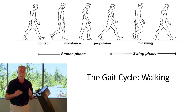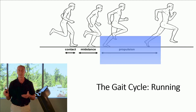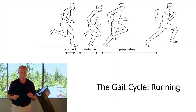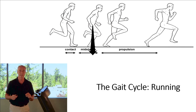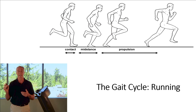If you look at running, the contact and mid-stance cycles are greatly reduced, but the propulsive period is extended. What defines running is that the center of mass is at a low point during mid-stance and a high point as they go into the propulsive period. The propulsive period is greatly extended.